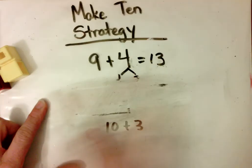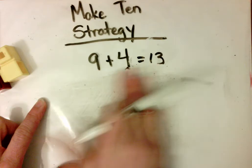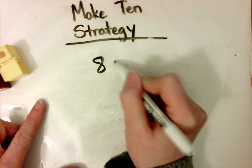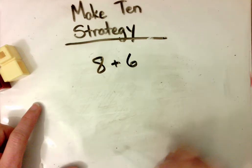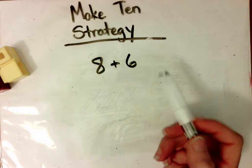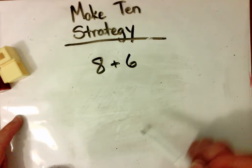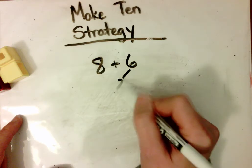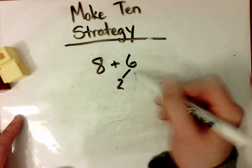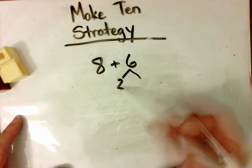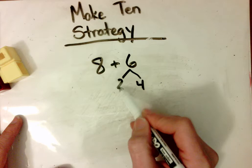If I want to show it without doing any picture, let's try it with another number. Let's say I used 8 plus 6. Which number do I want to start with to make 10? You can start with either, but I want to use 8 because it's closer to 10. I know I need 2 more to make 10, so I'll take 2 from my 6. What do I have left? 6 is made of 2 and 4. 8 plus 2 is 10.